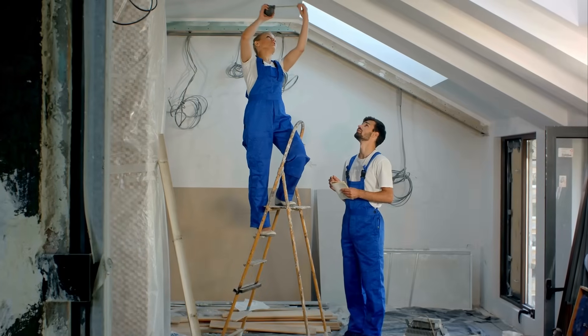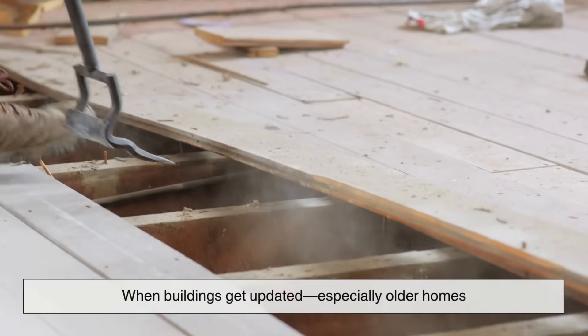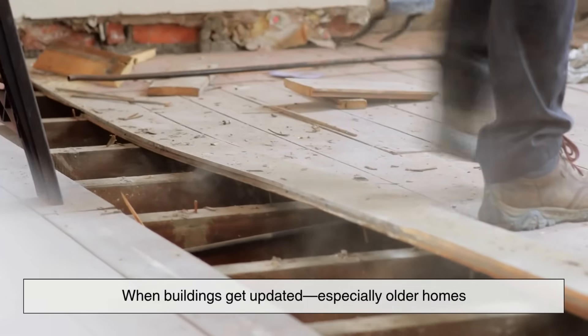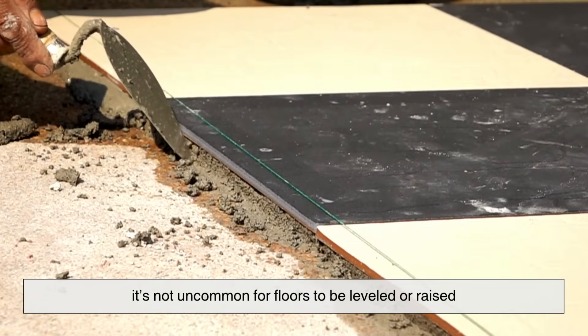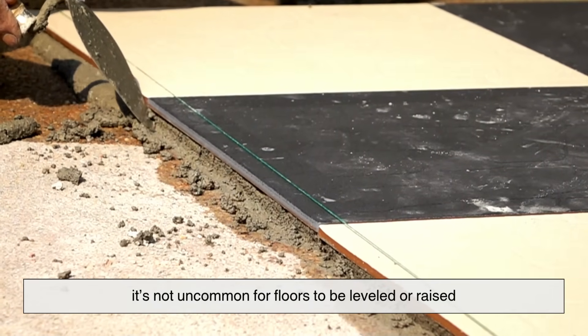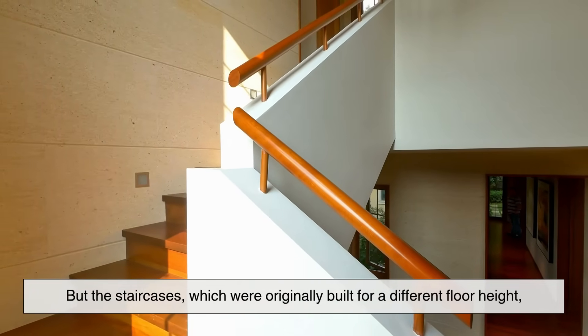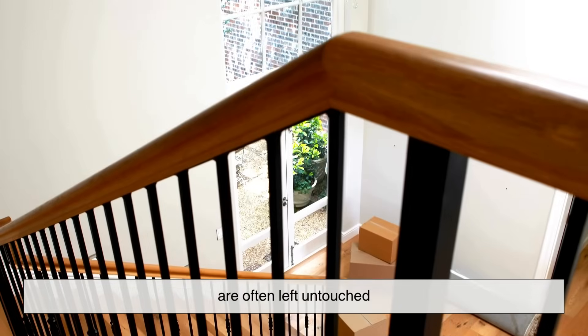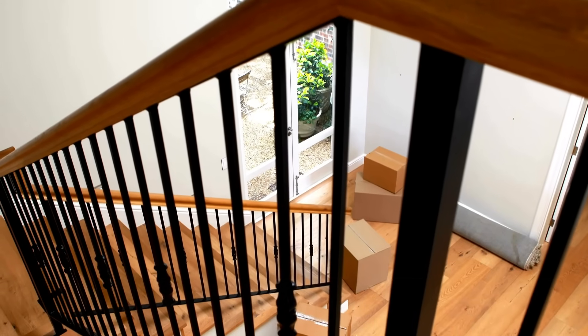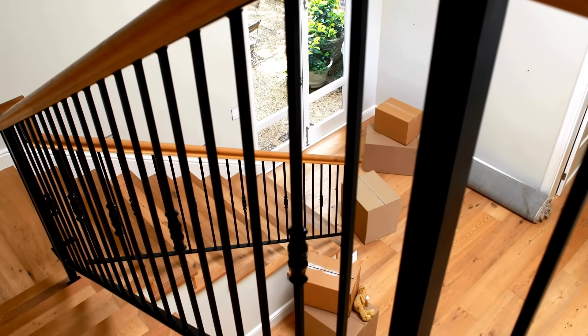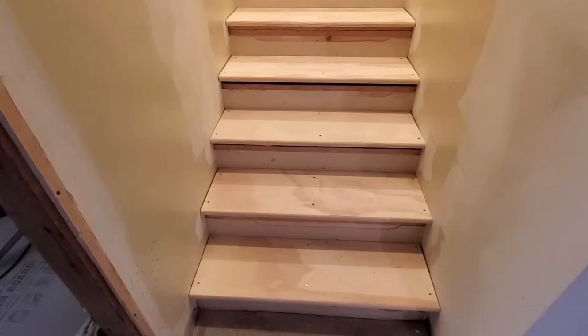Another common reason is renovations. When buildings get updated, especially older homes, it's not uncommon for floors to be leveled or raised. But the staircases, which were originally built for a different floor height, are often left untouched. That mismatch leads to, you guessed it, an uneven step at the top or bottom.